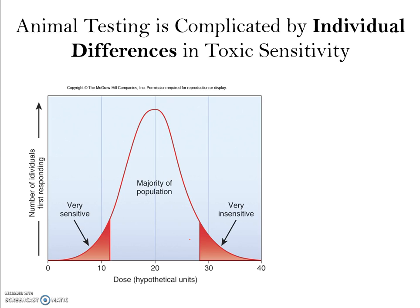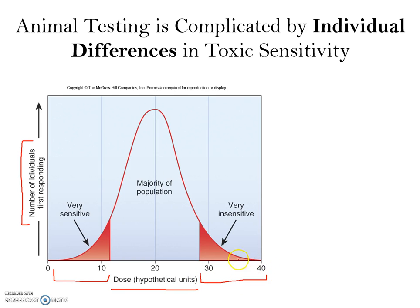Similar to the tolerance curve from ecology, we can look at a dose-response curve for toxicity. On the x-axis is dose in hypothetical units; on the y-axis is the number of individuals that respond. A few individuals are very sensitive and respond at a low dose, a few are very insensitive and only respond at a high dose, and most of the population responds at some intermediate dose.